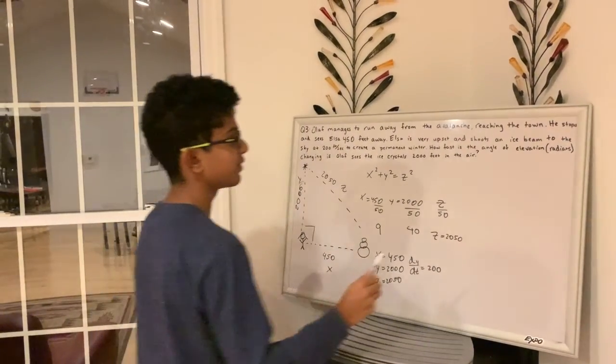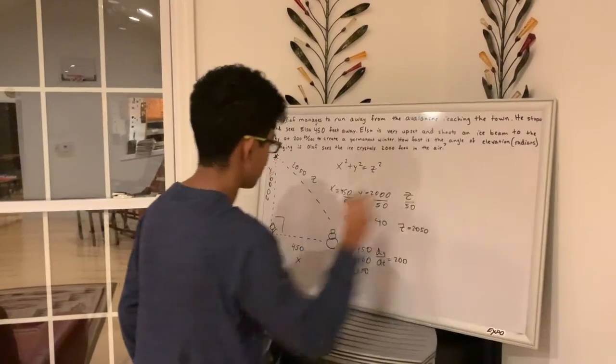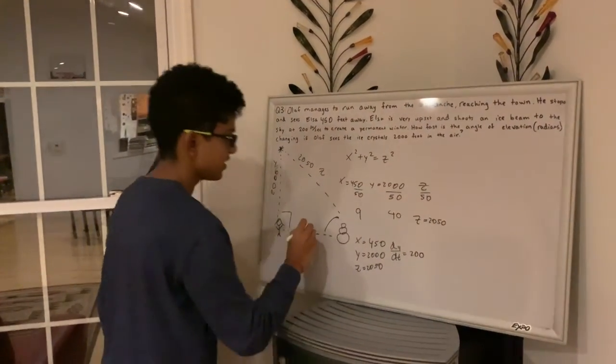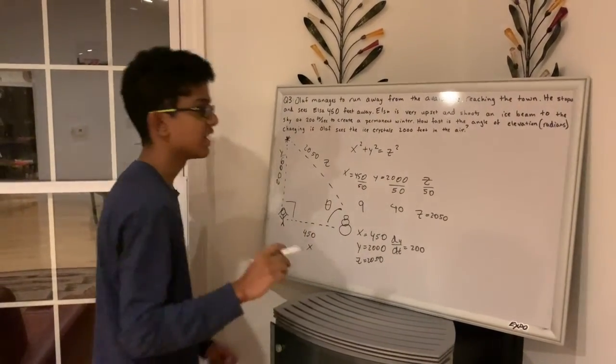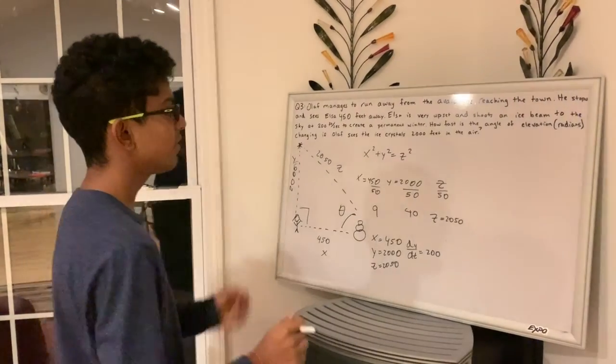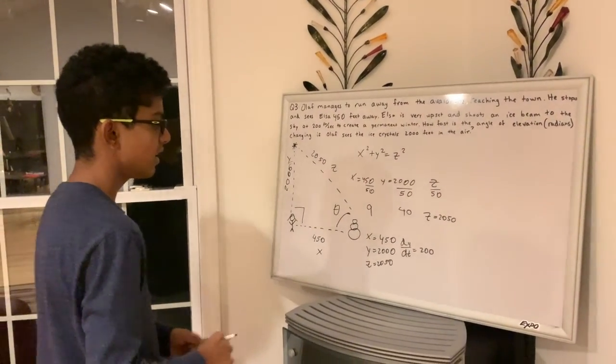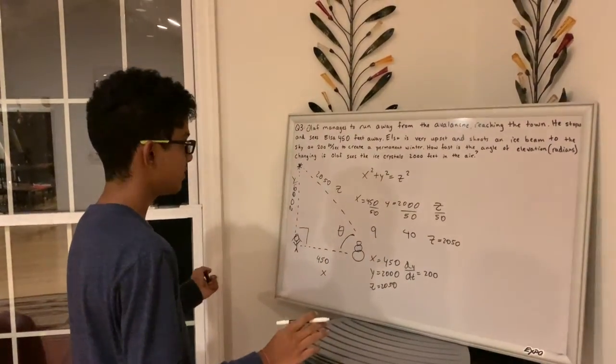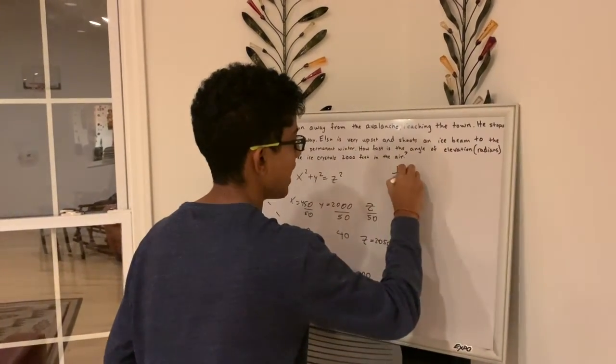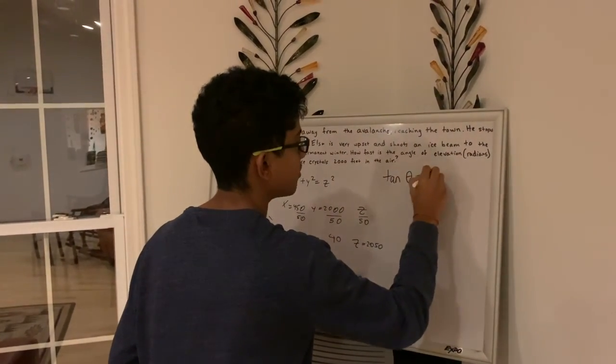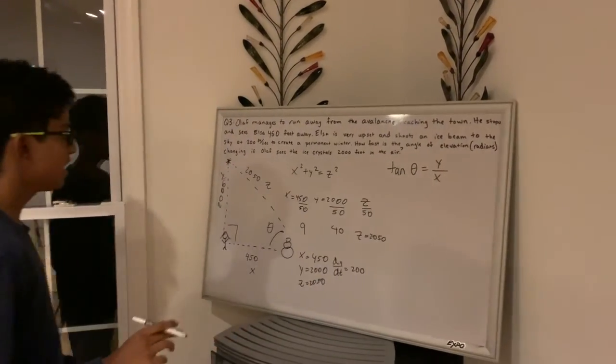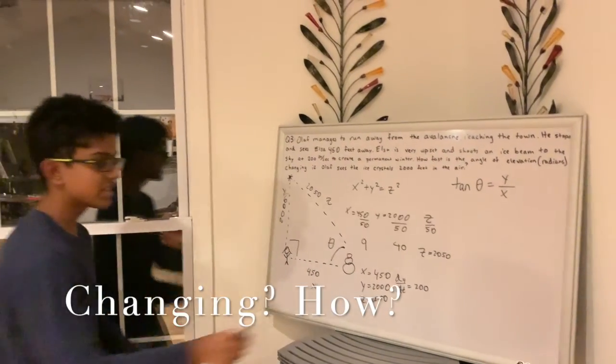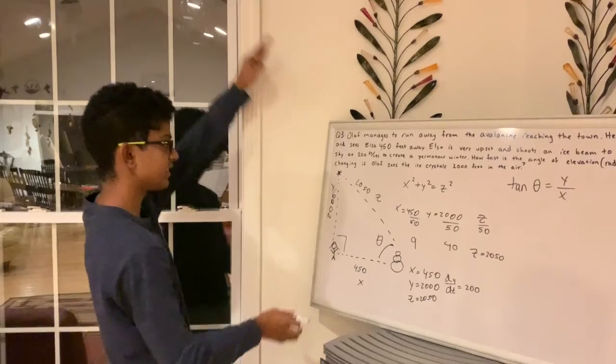So now the very important thing that we should look at is asking for the angle of elevation. So this right here is the angle of elevation. We'll just mark it as theta. So the angle of elevation is what we need to find. So we will set up an equation with the things that we know. So we could do tan theta equals y over x. So y is constantly changing, we can see dy over dt constantly changing, bigger, bigger, bigger.